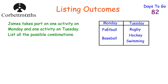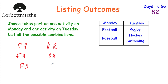Let's start off working in order, starting with football on Monday. He could do football and rugby, football and hockey, or football and swimming. Then if he does baseball on Monday, he could do baseball and rugby, baseball and hockey, or baseball and swimming. So there are six possible combinations in total: football and rugby, football and hockey, football and swimming, baseball and rugby, baseball and hockey, and baseball and swimming. Well done if you got that right.